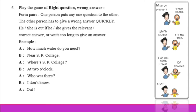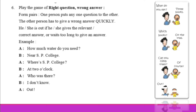Then A asks again: who was there? B answers: I don't know. This answer is relevant, so because B gave a relevant answer, A is out. In this way, whoever gives a relevant answer causes the questioner to be out. This is how the game works.